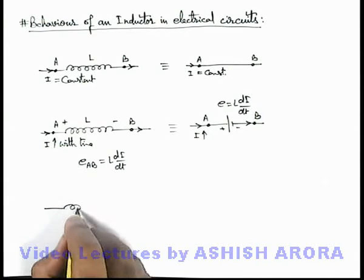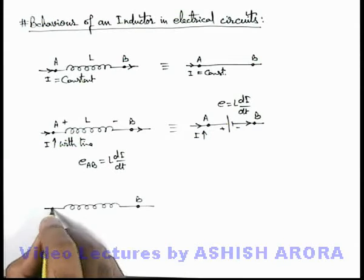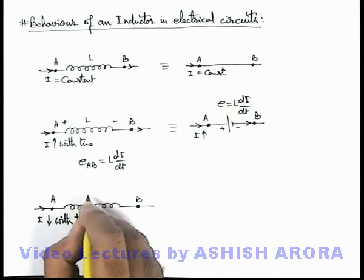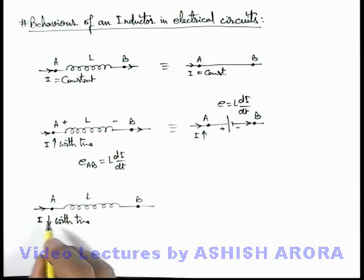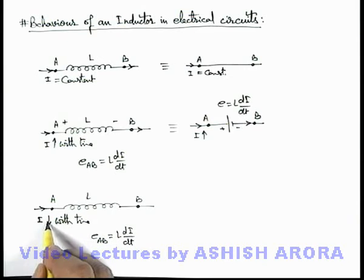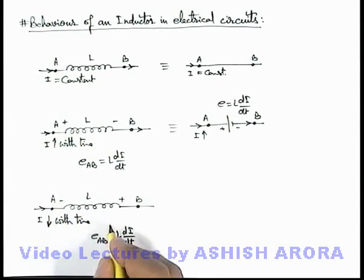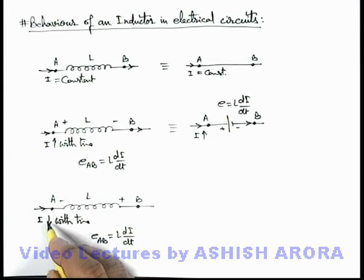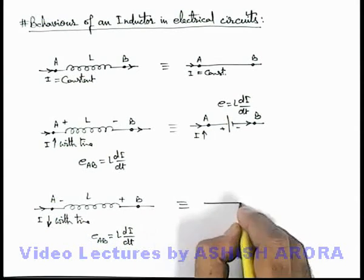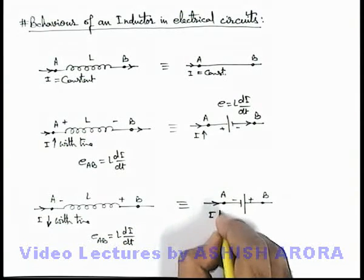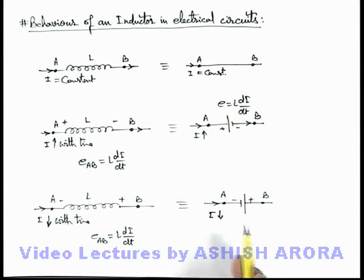Now if we consider the third case, in which the inductor is again connected across terminals A and B, but the current passing through it is decreasing with time. Since it has self-induction coefficient L, there will again be an EMF induced across A and B — a self-induced EMF of magnitude L·di/dt. Its direction is such that it will oppose the decrease in current, so high potential will be at B and low potential at A, such that the induced EMF supplies its own current in the same direction to oppose the decrease. In electrical circuits, this acts like a battery with opposite polarity to oppose the decrease in current in the branch where the inductor is connected. These are the 3 possible cases.